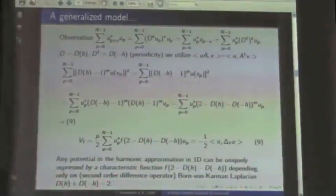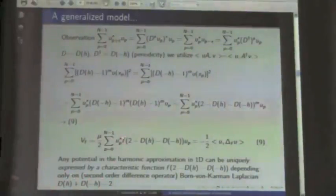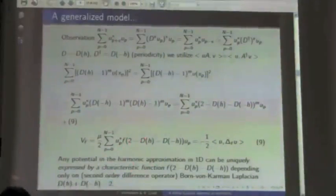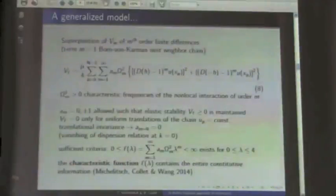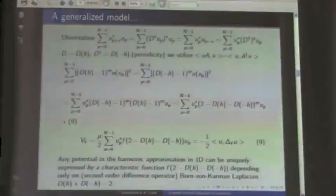This operator is a second order difference with the next neighbor. If you have only next-neighbor springs, you have only this Born–von Kármán operator. But we have here any orders of M. You can now sum up and use the definition of the characteristic function. The harmonic potential can be written in terms of the characteristic function, where the argument lambda is now replaced by the second order difference. So any elastic energy on the chain can be written in this way with a simple characteristic function which contains all information. The Born–von Kármán chain is included as a special case.